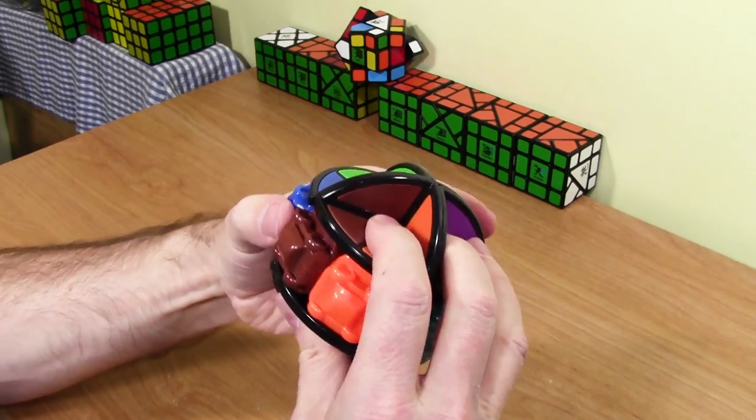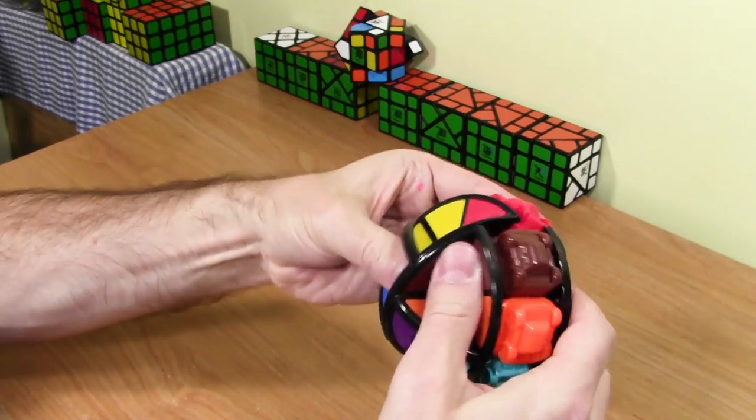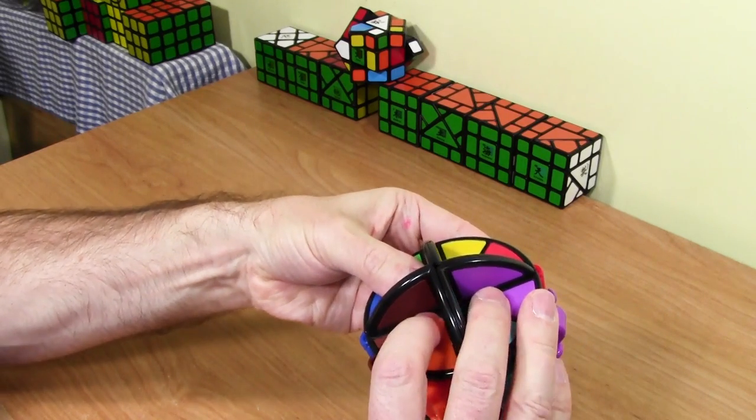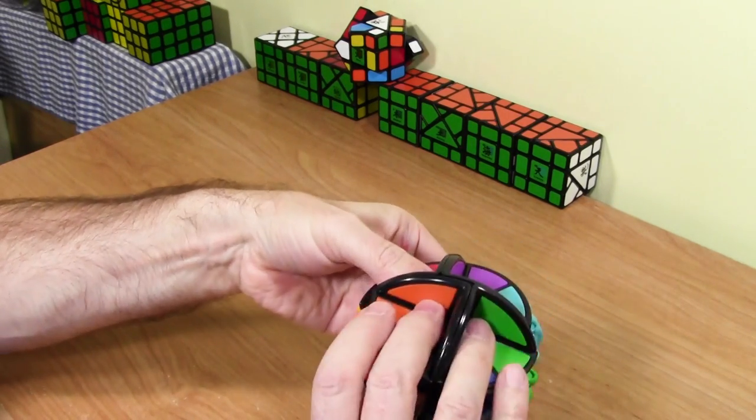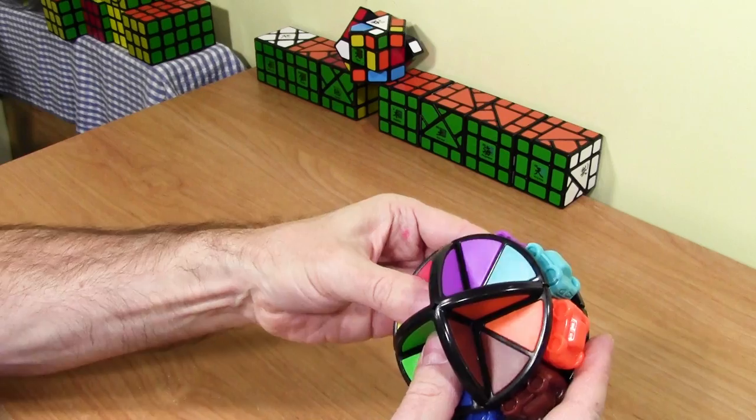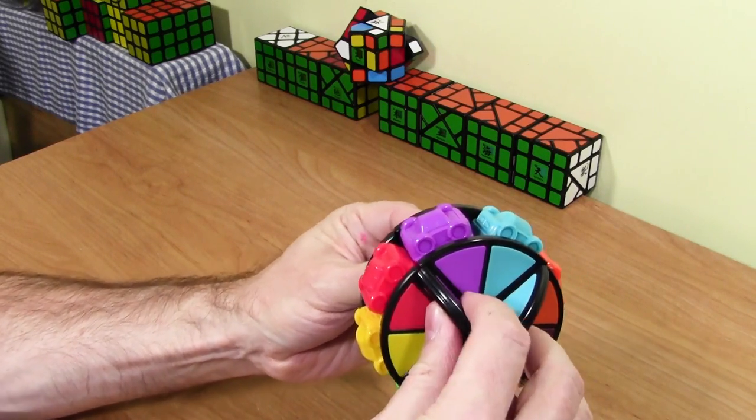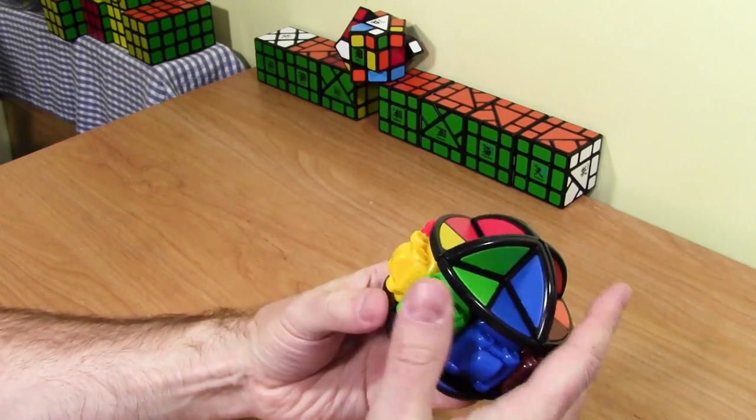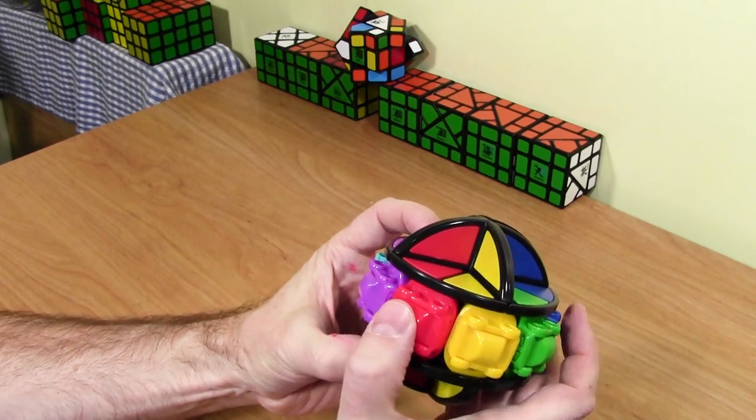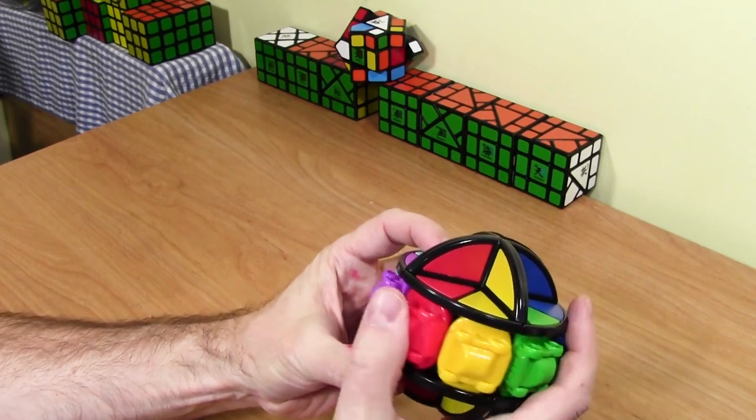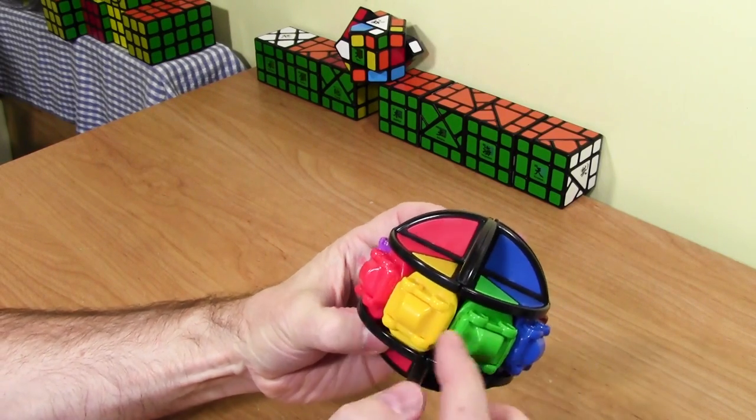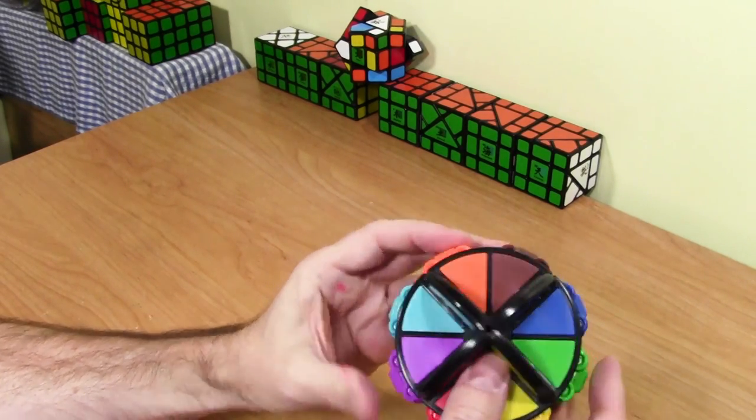So you gotta line the cars up and then that part goes and then you can also scramble that part. So that's pretty good. Now the question is, can I also turn the top and bottom? No, not independently. So it's not gonna be a super challenging thing to solve, but actually maybe not, maybe it will be because you can turn it one step and these could probably get mixed up pretty quickly.